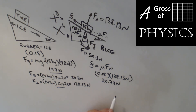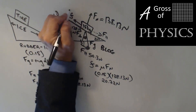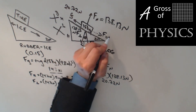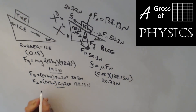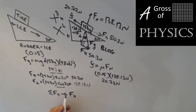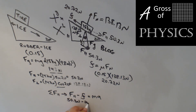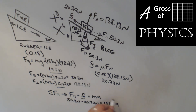Now we can determine the acceleration of the tire. Summing forces in the parallel direction — using down the incline as positive — we get: F-parallel minus friction equals ma. So 50.3 minus 20.72 equals 15 kilograms times a. With a as the only unknown: 50.3 minus 20.72 is 29.58 divided by 15, giving an acceleration of 1.972 meters per second squared.